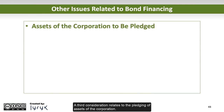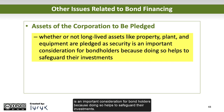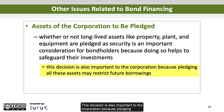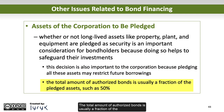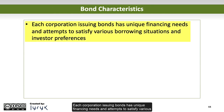A third consideration relates to the pledging of assets of the corporation. Whether or not long-lived assets like property, plant, and equipment are pledged as security is an important consideration for bondholders because doing so helps to safeguard their investments. This decision is also important to the corporation because pledging all these assets may restrict future borrowings. The total amount of authorized bonds is usually a fraction of the pledged assets, such as 50%.